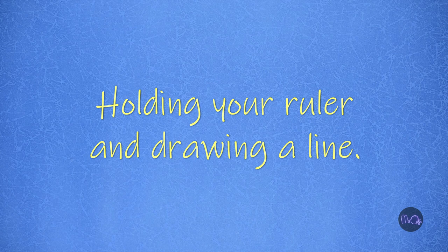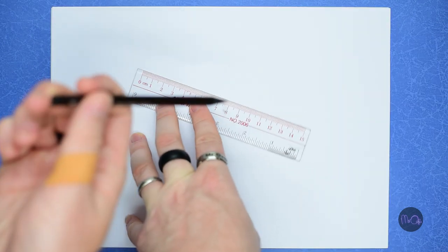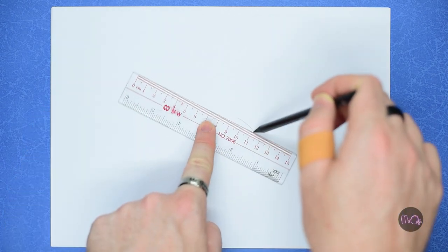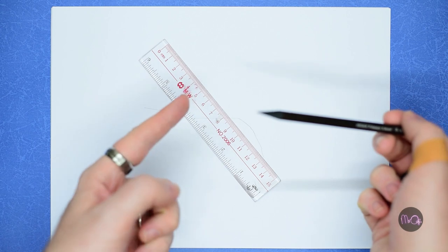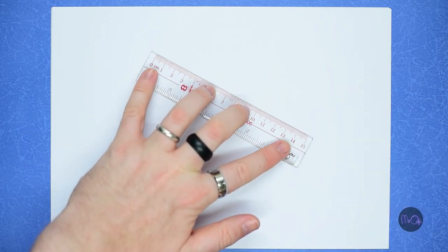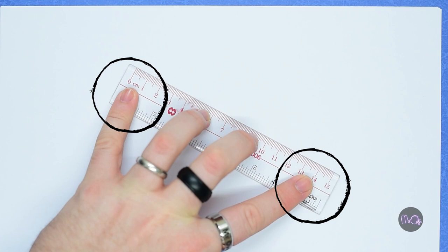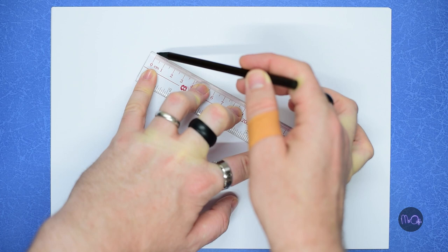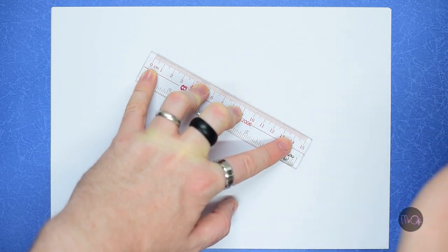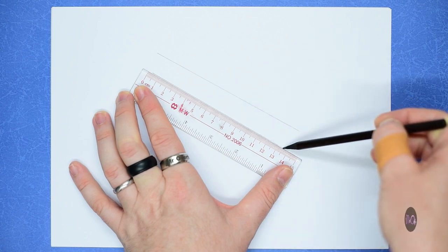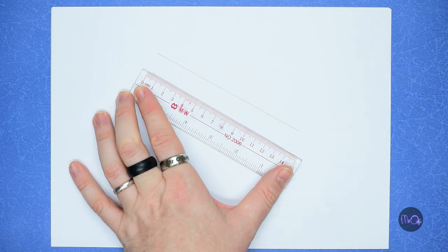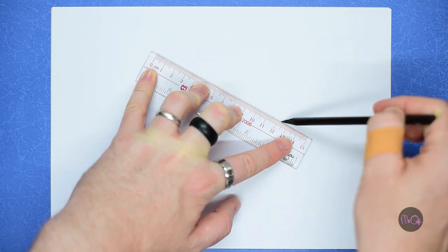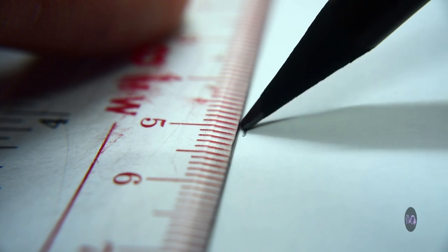Number one: holding your ruler and drawing a line. This is no good, and neither is this. You need to get your first finger and little finger as far apart as possible. If in doubt, think heavy metal. Thumb and middle finger works well too, just keep them far apart. Point your pencil towards the ruler so it touches the ruler and the paper at the same time.